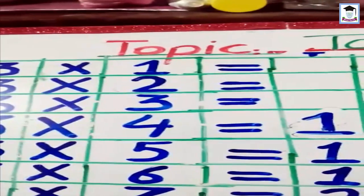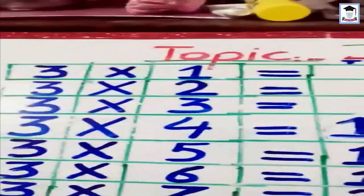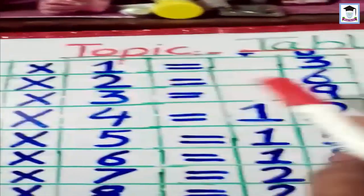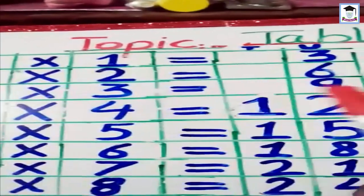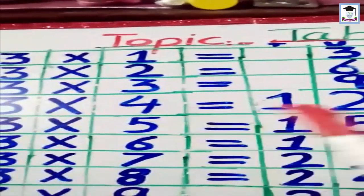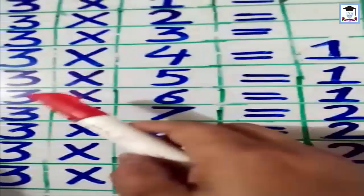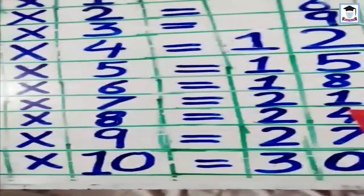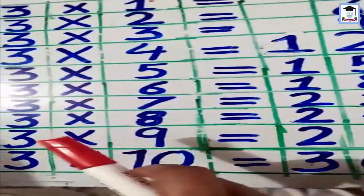Now we will sing this student, we will sing the table of three: 3×1=3, 3×2=6, 3×3=9, 3×4=12, 3×5=15, 3×6=18, 3×7=21, 3×8=24, 3×9=27, 3×10=30.